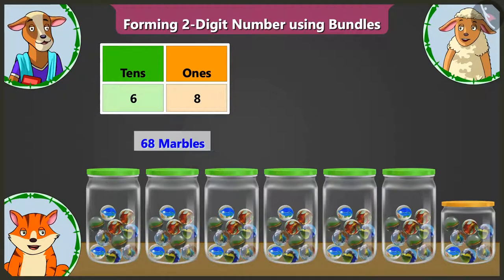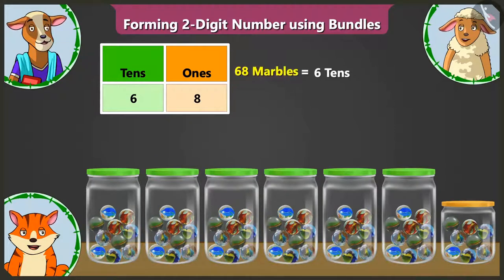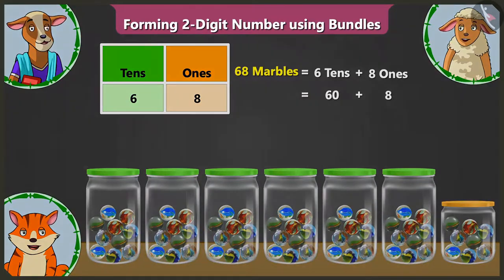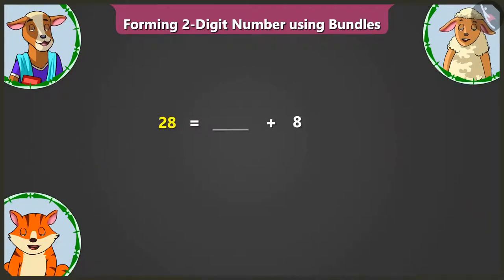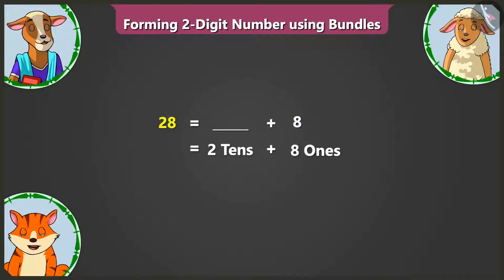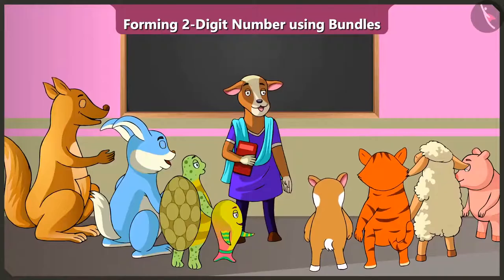Now, children, I will teach you how to expand sixty-eight into two parts. Sixty-eight has six tens and eight ones. Six tens means sixty, and eight ones means eight. Lily, expand the numbers written on the board. Twenty-eight has two tens and eight ones, so twenty-eight's expansion is twenty and eight.